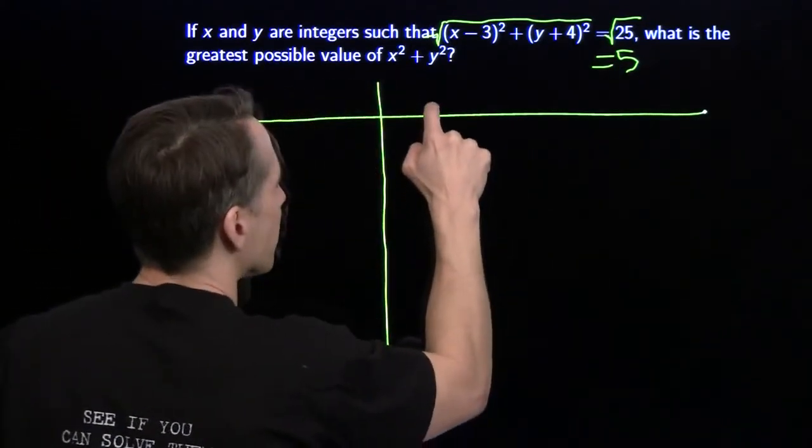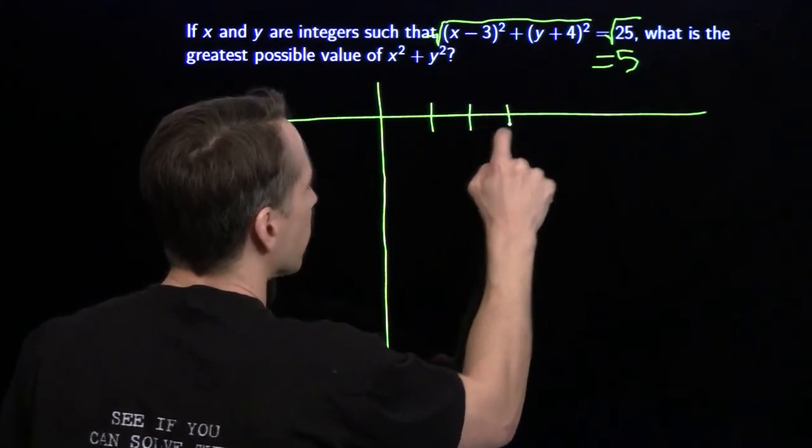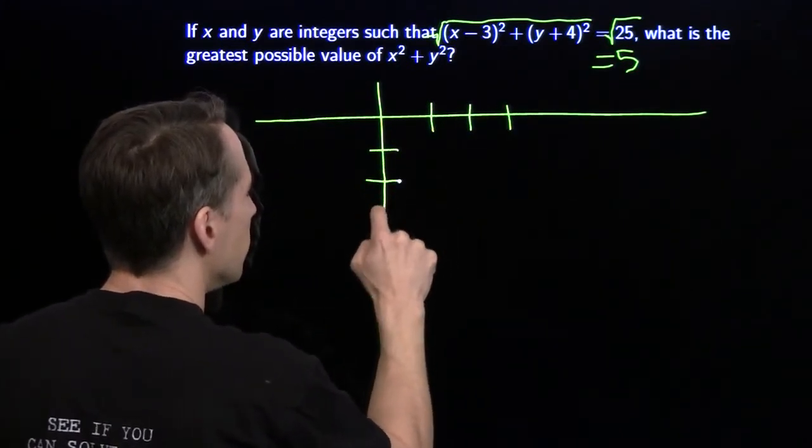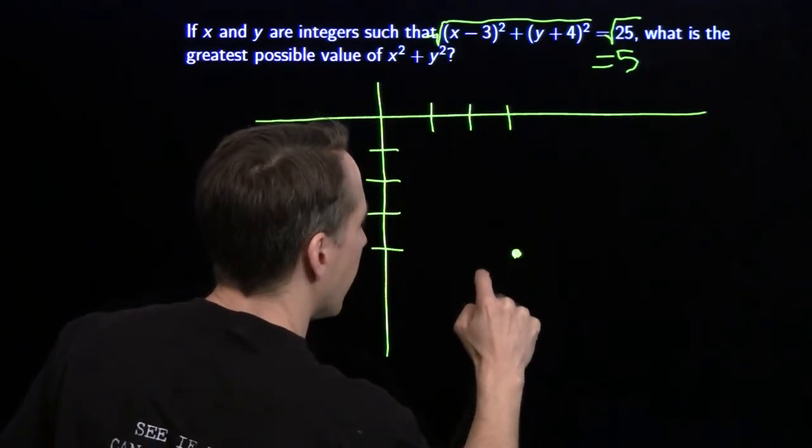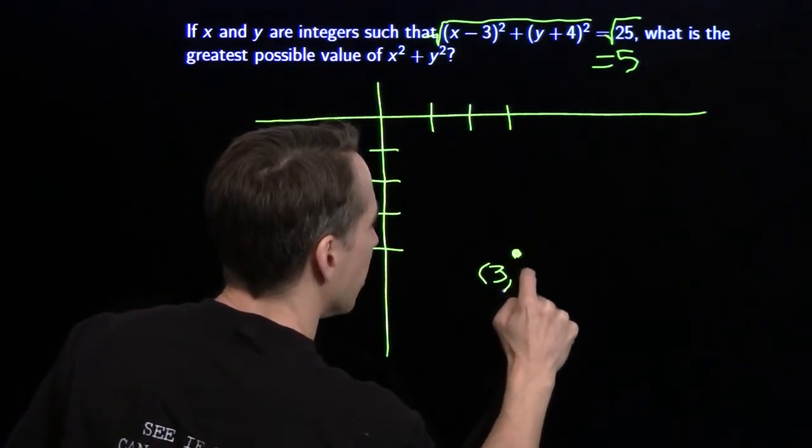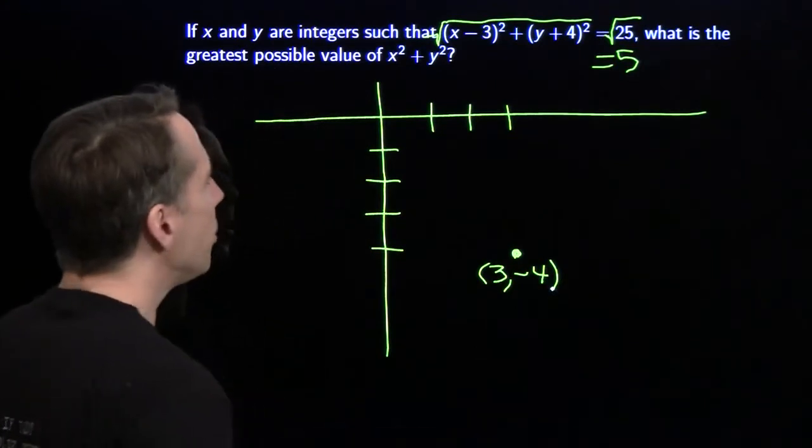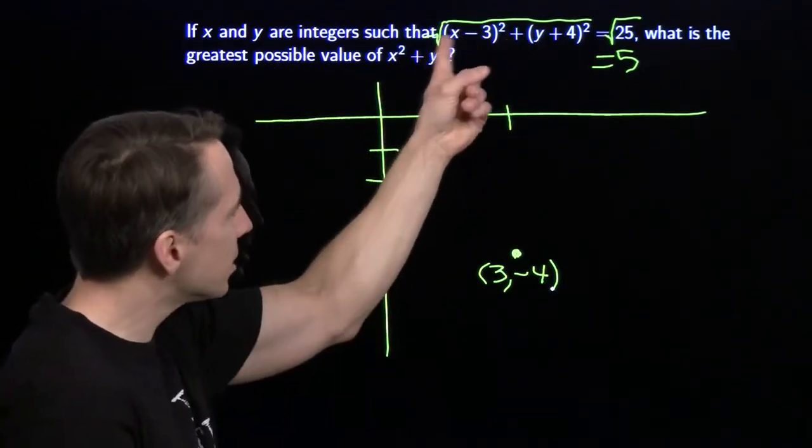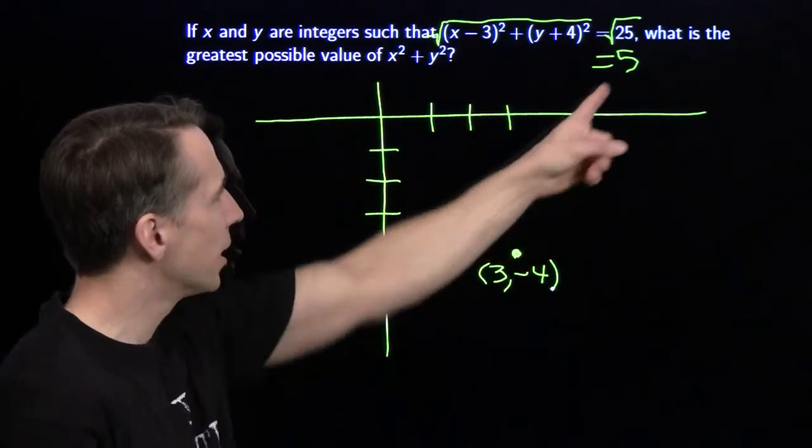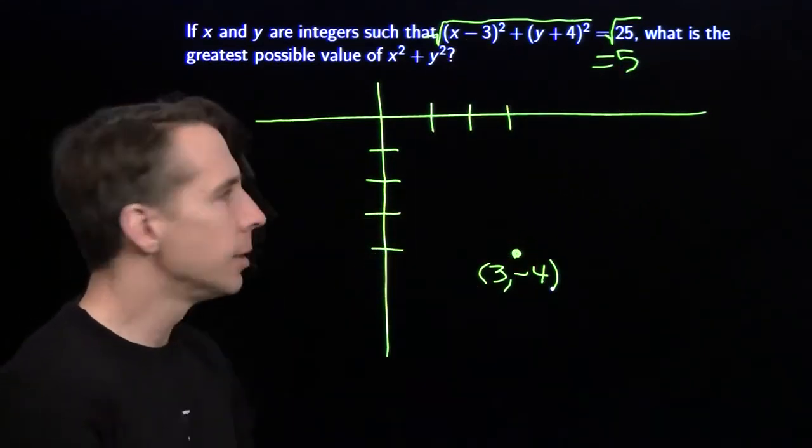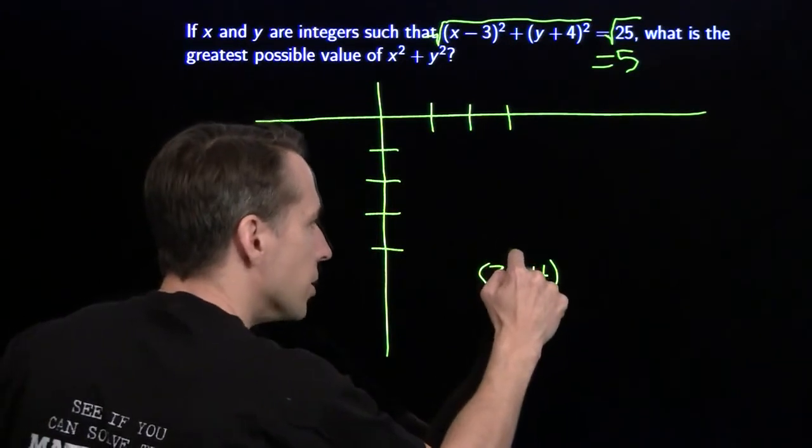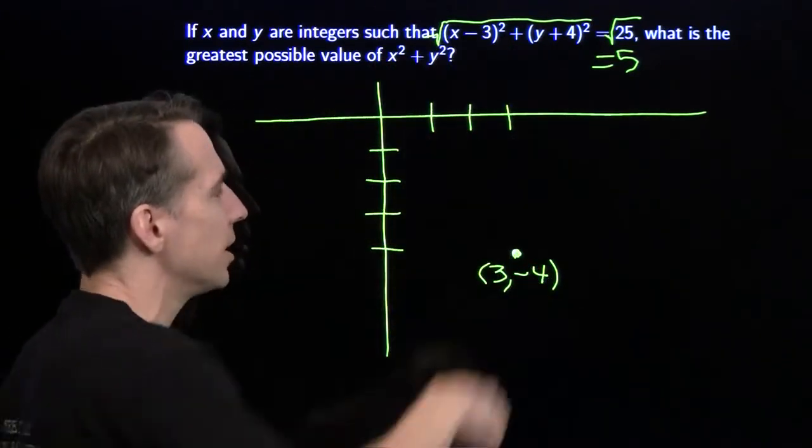Maybe it'll make a little more sense. Let's go out here. 1, 2, 3. 1, 2, 3, 4. This point here, I'm going to call that 3, negative 4. And all this equation says is the point X, Y, the distance from X, Y to this point, 3, negative 4, is 5. That means the point X, Y is on a circle that's centered at 3, negative 4 and has a radius 5.